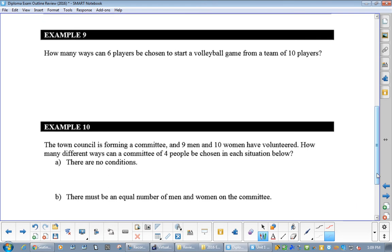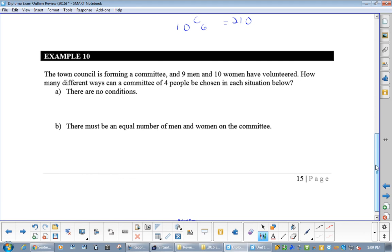Okay. Example 9. 6 players are chosen to start a volleyball game of 10 players. Now this one, the assumption is that order doesn't matter because they didn't talk about positions. Okay? So you would have 10 players. You will choose 6 to get 210. Order matters, perm. Order doesn't matter, com. Right?